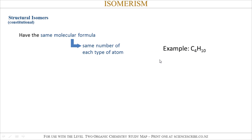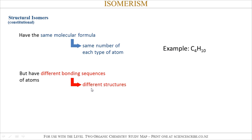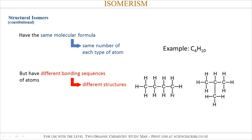For example, they might both have four carbon atoms and ten hydrogen atoms, but the bonding sequences of those atoms could be different. So that means they actually have a different structure. Here are two examples. Both of these have four carbon atoms and ten hydrogen atoms, so they've got the same molecular formula, but you can see pretty clearly that the bonding sequences of those atoms are different to each other.